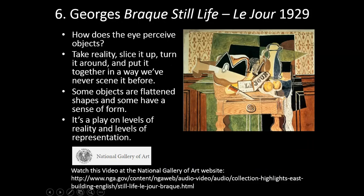Number six — Georges Braque. The name of the artwork is Still Life, Le Jour, 1929. Le Jour in French means the day. How does the eye perceive objects? This is what Braque was trying to do with the viewer: take reality, slice it up, turn it around, and put it together in a way we've never seen it before. Some objects are flattened shapes and some have a sense of form — it's a play on levels of reality and representation. His painting is at the National Gallery of Art, which has a great video on their website.